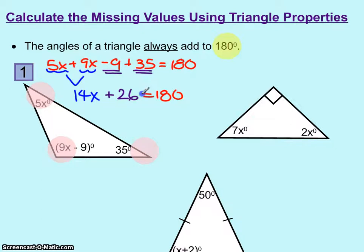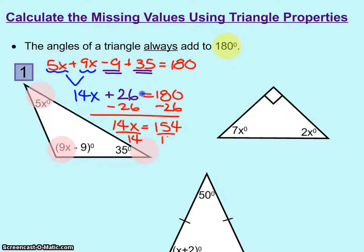From there, we will be subtracting 26 from both sides. 14x equals 154. And then we will divide both sides by 14, calculating that x equals 11 for that triangle.